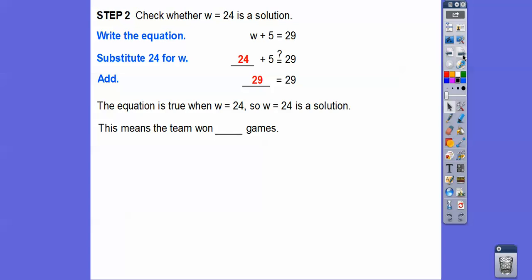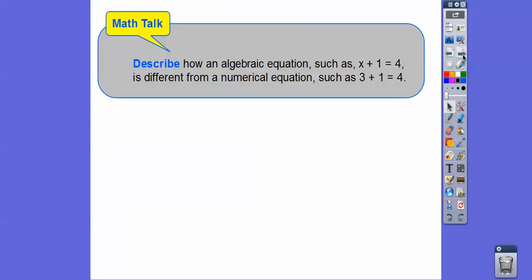And that just means that the team won 24 games. Remember, w was how many games they won. W standing for winning, and that was the answer.